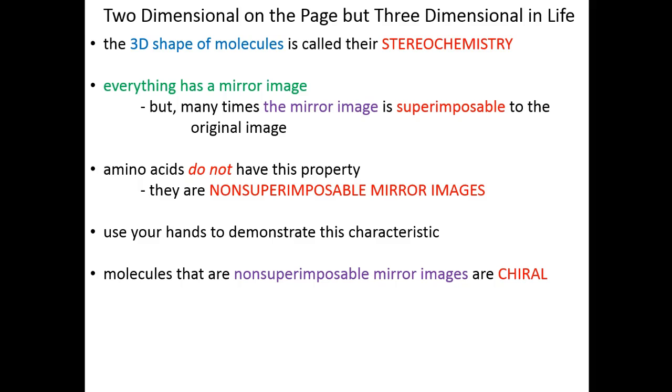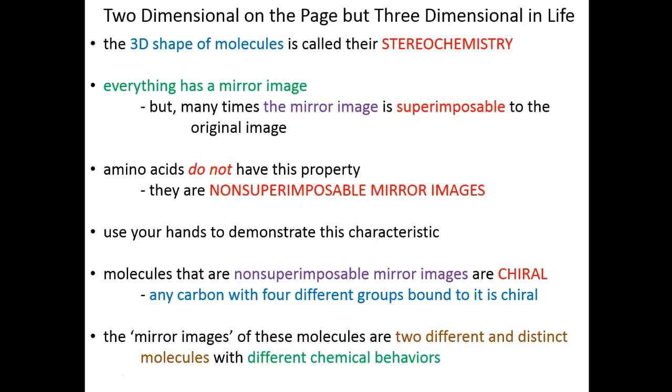We call molecules that have non-superimposable mirror images of themselves chiral. And we can use the rule of thumb that any time a carbon making its four bonds is making those four bonds with four different chemical groups, it is by definition going to be chiral. It will be a non-superimposable mirror image.